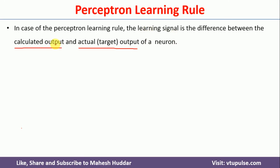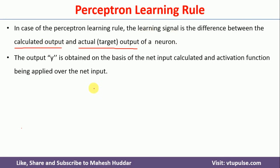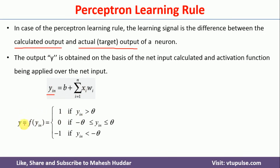How do we calculate the output at the output unit? First, we use this equation to calculate the net input to that node: y_in = b + summation of x_i * w_i, where b is the bias, x_i is the input, and w_i is the weight of the i-th unit. Once we get y_in, we set a threshold: if y_in is greater than theta, output is 1; if it is between -theta and +theta, output is 0; if it is less than -theta, output is -1.